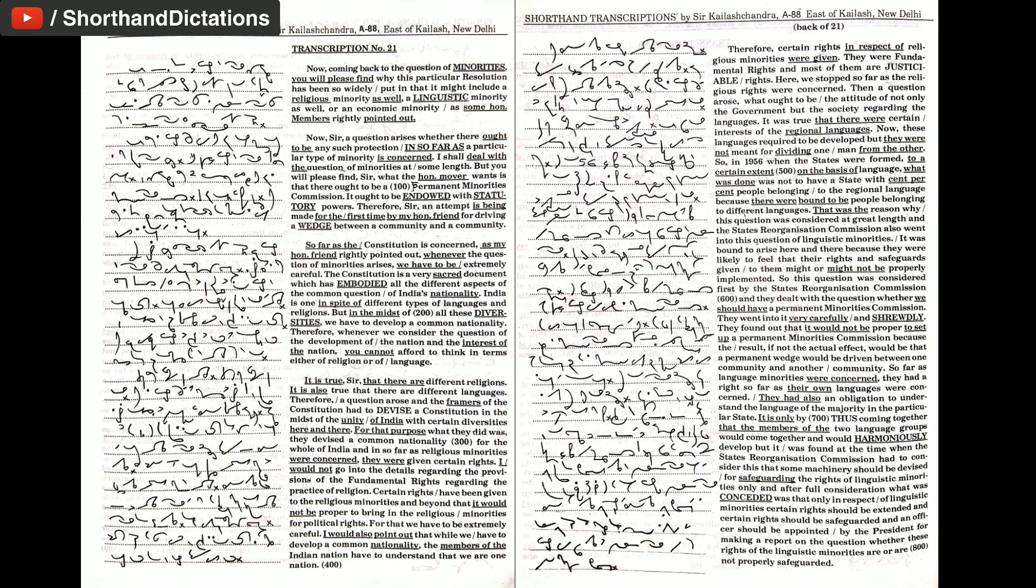It is true that there are different religions. It is also true that there are different languages. Therefore, a question arose and the framers of the constitution had to devise a constitution in the midst of the unity of India with certain diversities here and there.